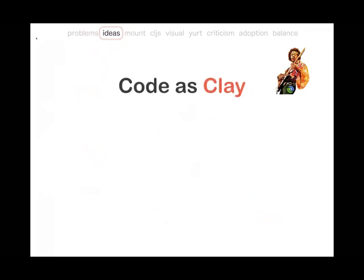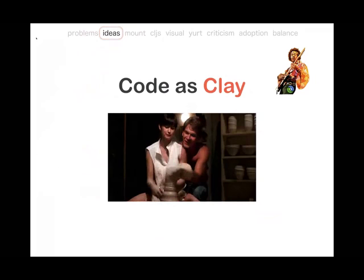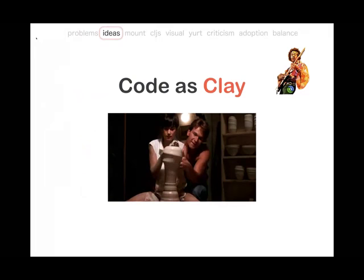Another idea is to add lifecycle to states. For example, if a database connection goes stale, it would be nice to have control — to stop it and start it before recompiling that namespace. I like my code as clay — I like to create things, break them, create them again. Systems built this way end up being a lot more robust and resilient because they've gone through a lot of breakage and redesign. They also end up a lot closer to the requirements. I'd like to show you how I do it with Mount.